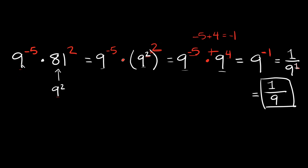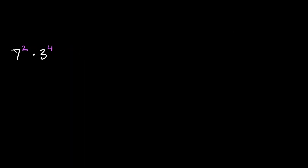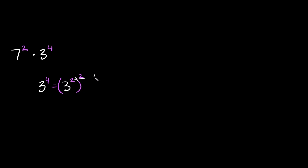Let's try one last example. For this one, instead of changing the base, we're going to have to change the exponents. We have seven squared times three to the fourth power. We can't really rewrite either of our bases to match the other one — that's common when both bases are prime, like both of these are. So the other thing we can look at is changing the exponents. Four can be broken up into two times two, and that would match the two we have over here. So three to the fourth is the same thing as three squared, squared — because two times two equals four.